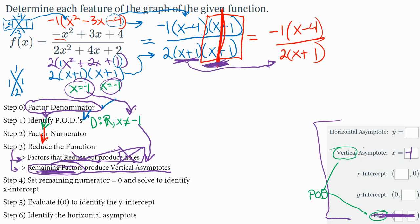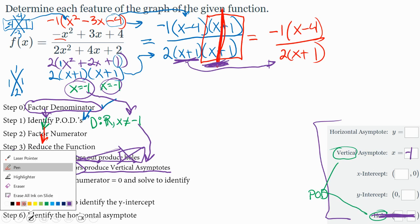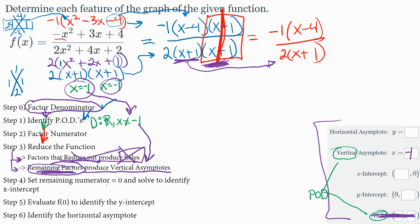So there are no holes. Even though one reduced out, the vertical asymptote is at negative 1. So I got that part done, two things in one there. And now we continue on down our list. So now we move into step 4. Step 4 says you take the numerator that's left, which in our case is negative 1 times x minus 4. You set that equal to 0 and solve.